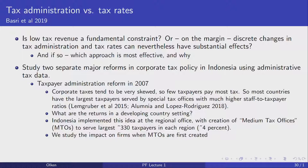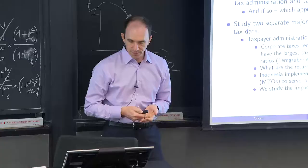One was a corporate taxpayer administration reform. Corporate taxes tend to be very skewed — there's a small number of really large firms that pay most of the tax. Therefore, you may want to invest your tax administration resources on those firms. Indonesia, when we were studying this, was rolling out this same idea to medium-sized taxpayers, specifically creating medium-sized tax offices to serve the largest 330 taxpayers in each region.